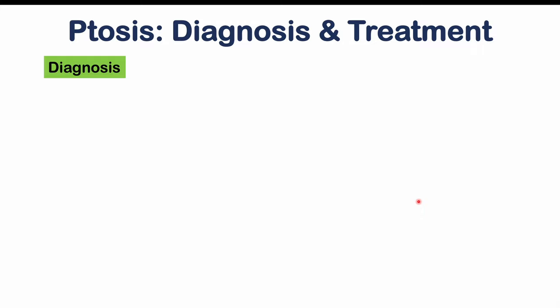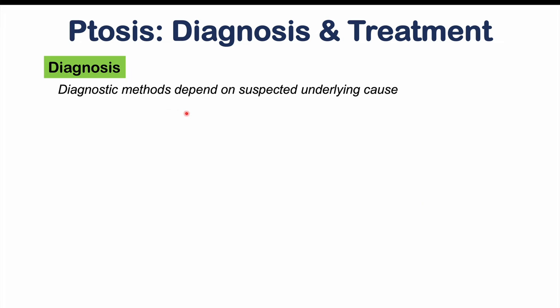Ptosis is often a clinical finding of an underlying condition, so diagnostic methods depend on the suspected cause. This can include blood work or imaging. If myasthenia gravis is suspected, it's important to test for acetylcholine receptor antibodies and anti-striated muscle antibodies. If the acetylcholine receptor antibody is negative, we can look for muscle-specific tyrosine kinase. Imaging is important especially when there are other neurological findings, to identify a neoplasm or changes consistent with multiple sclerosis.